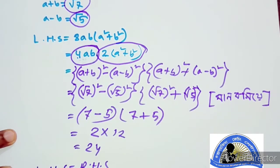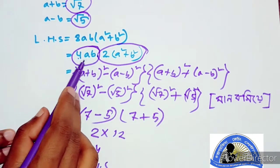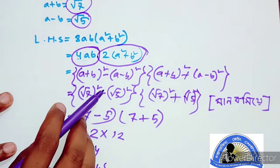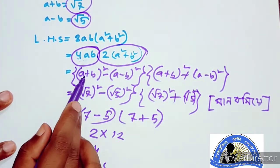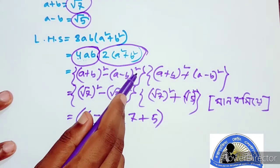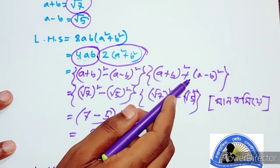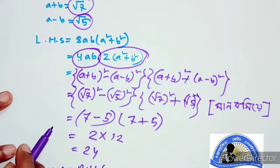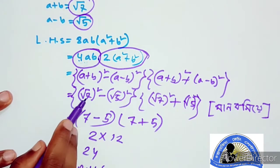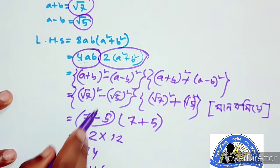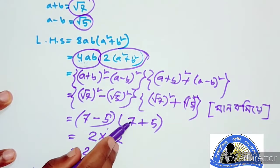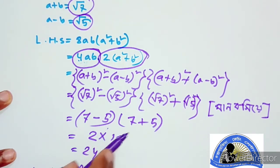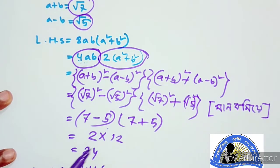Proved. Now we have 4ab and 2 into a squared plus b squared. We used a plus b then minus 4 into a minus b. The root is 5, and the root is 5. So 7 plus 5 is 12, and 2 into 12 is 24. That gives us 24.